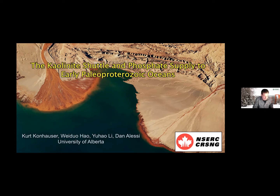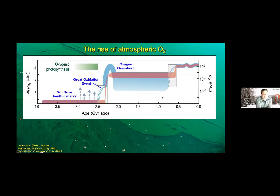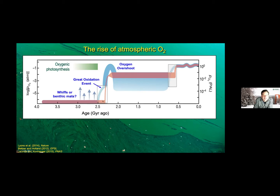I'm going to start with a slide that many of you have probably seen before, taken from Tim Lyons' 2014 Nature paper showing the evolution of oxygen on Earth. The purple lines here show the classic model invoked by Dick Hall and Jim Castings: very low oxygen until about 2.3 billion years ago, then an abrupt increase up to about 1% oxygen. This initial increase is what we call the Great Oxidation Event — the time when oxygen enters the atmosphere for the first time.